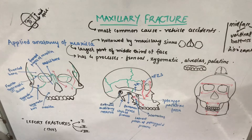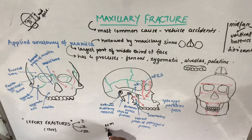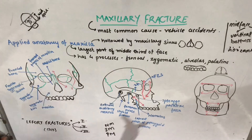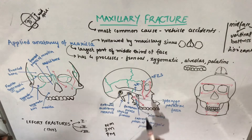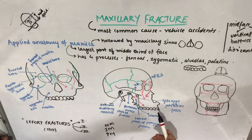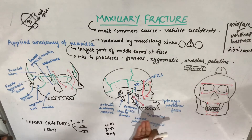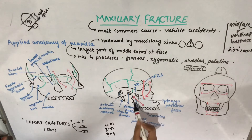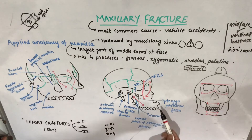Forces applied to the face are absorbed and transmitted by the buttress system. There are three vertical buttresses: naso-maxillary, zygomatico-maxillary, and pterygo-maxillary. Looking at the skull diagram: the orbit, alveolar bone of the maxilla, external auditory meatus, styloid process, lateral plate of the pterygoid process, hamulus, and pterygo-palatine fossa are all identifiable.